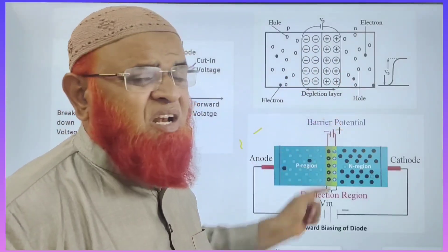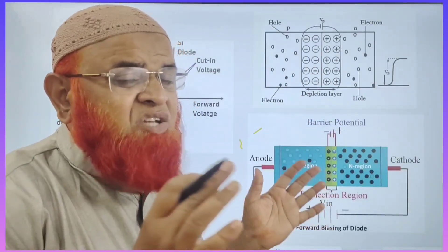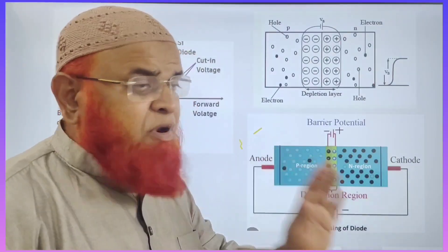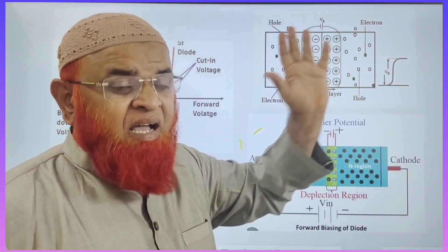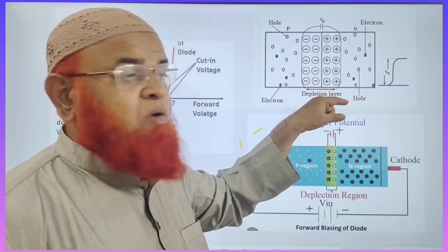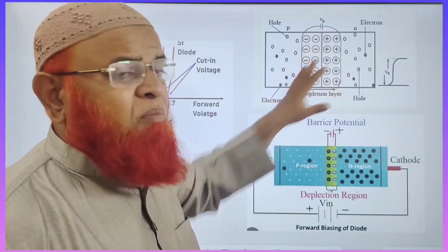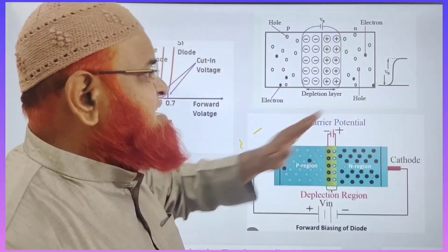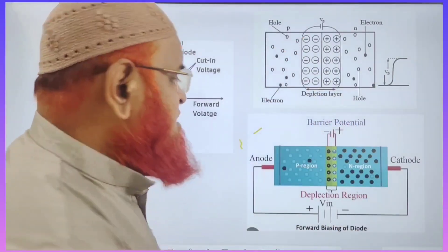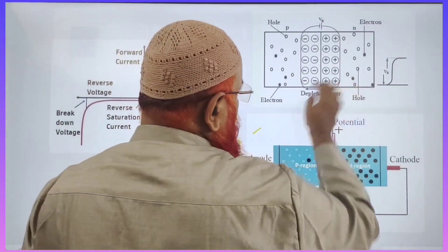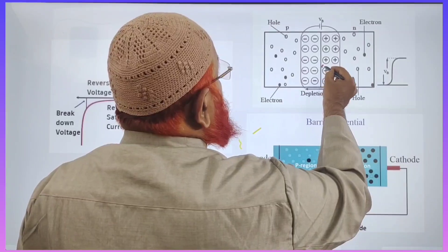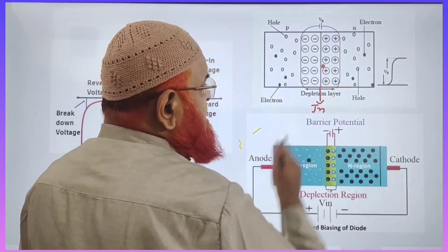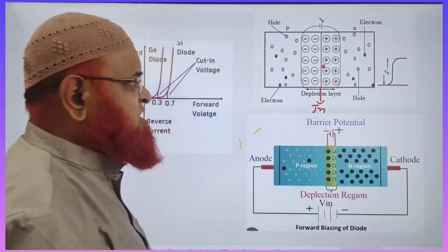This is called the depletion layer — depleted with the charges. That means no electrons and no holes are present. Depletion means emptied. They are emptied from electrons and holes. These are called immobile charge carriers. They don't have any mobility and they don't allow any mobility either. For example, this hole is trying to cross the junction — this is going to be the PN junction.